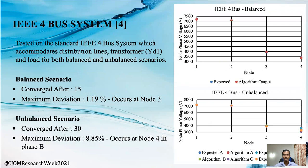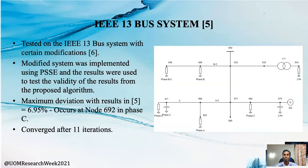Next, testing was done for the IEEE 4-bus standard test system for both balanced and unbalanced cases. The maximum deviation is 1.19% at node 3 for the balanced case and 8.85% at node 4 for phase B for the unbalanced case.